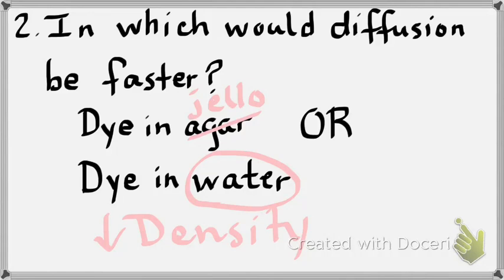Look at number two — in which would diffusion be faster, dye in jello or dye in water? Cross out 'agar' and write 'jello.' Jello is a semi-solid and water is a liquid. The answer is water. Density was one of the factors affecting the rate of diffusion we discussed, and water is not as dense as jello. A dye molecule would more easily move through water than jello.